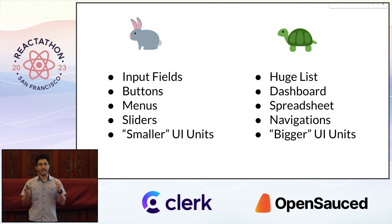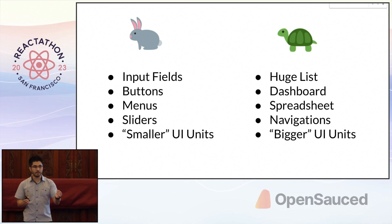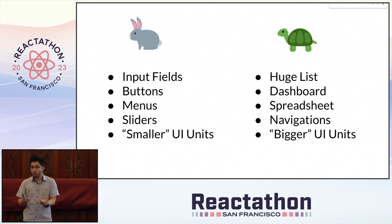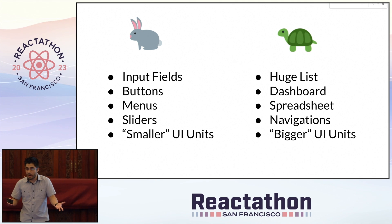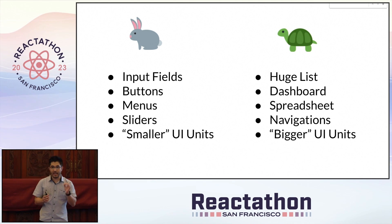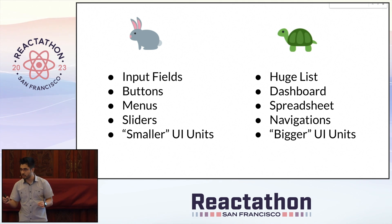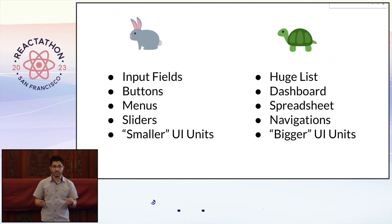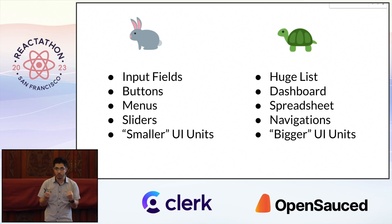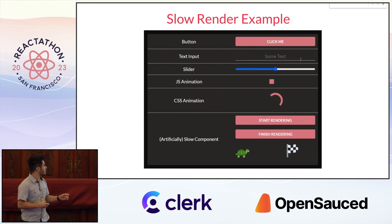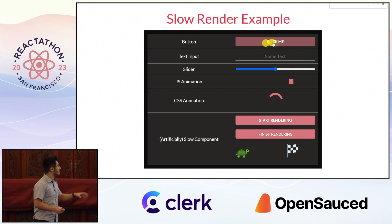Whenever we have both fast parts and slow parts in the same user interface — which is pretty much always — the problem is that the fast parts get coupled to the slow parts, in the sense that the slow parts drag down the responsivity of the fast parts. And to showcase this very concept, I just came up with a little demo here.